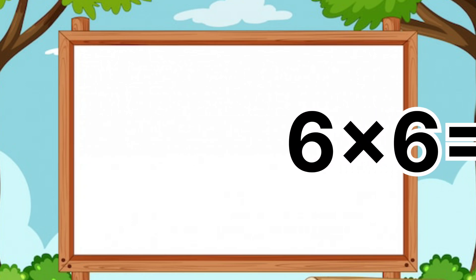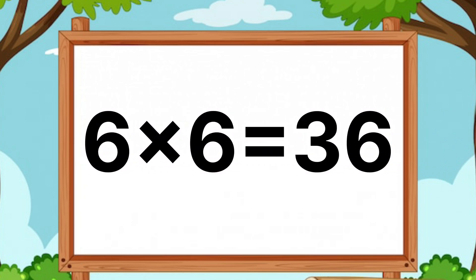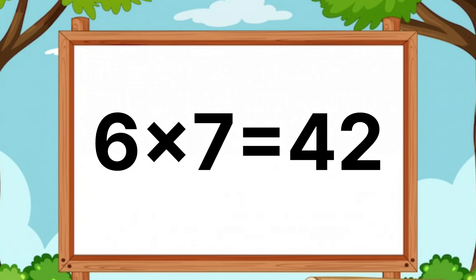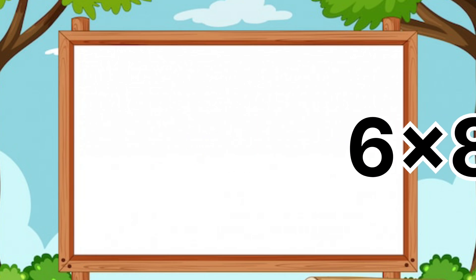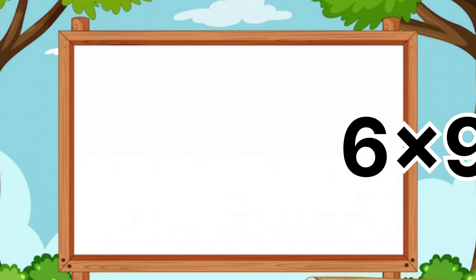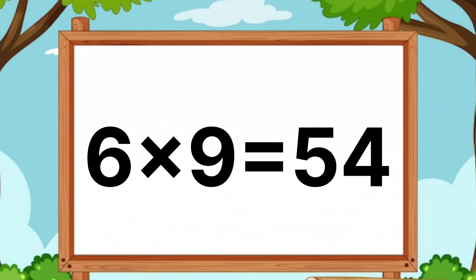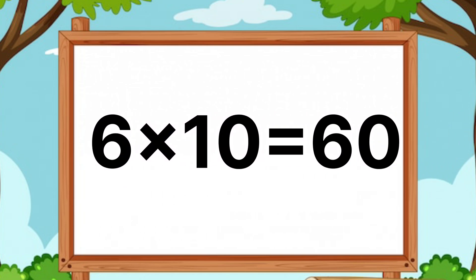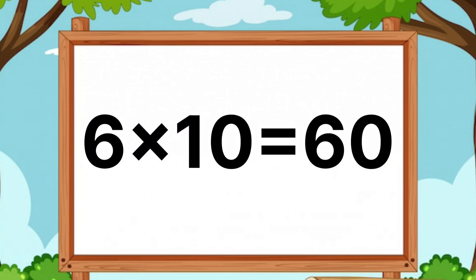Six sixes are thirty-six. Six sevens are forty-two. Six eights are forty-eight. Six nines are fifty-four. Six tens are sixty.